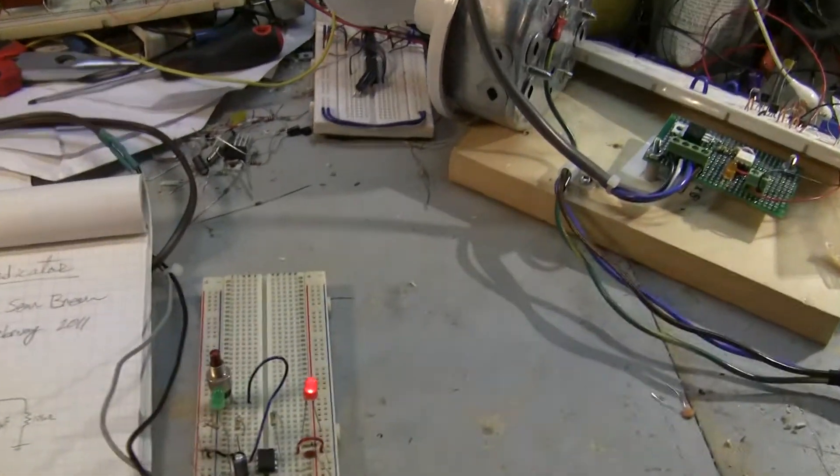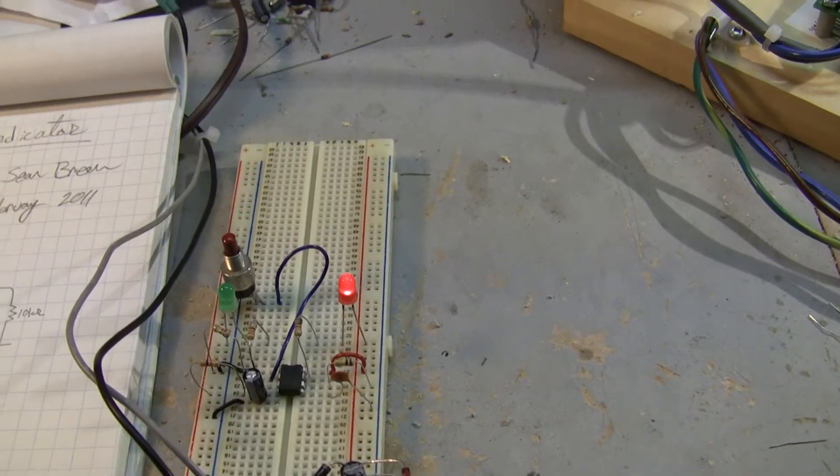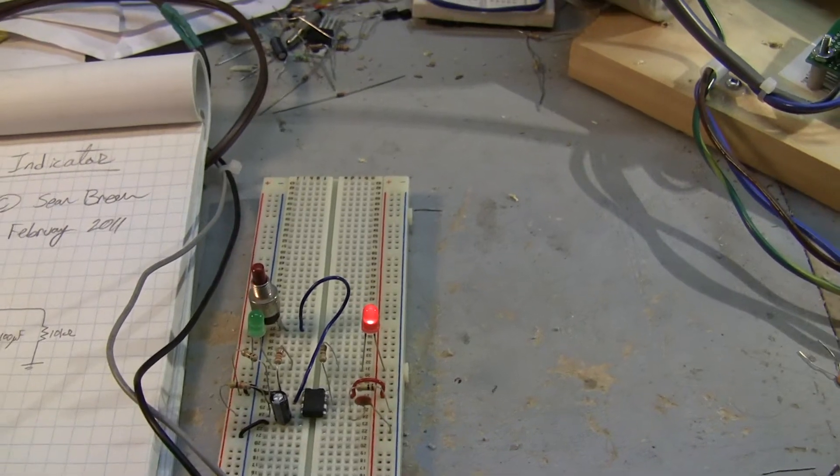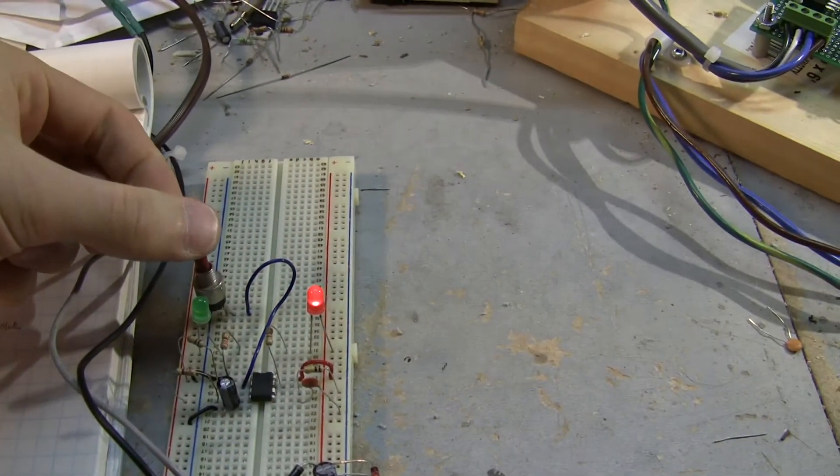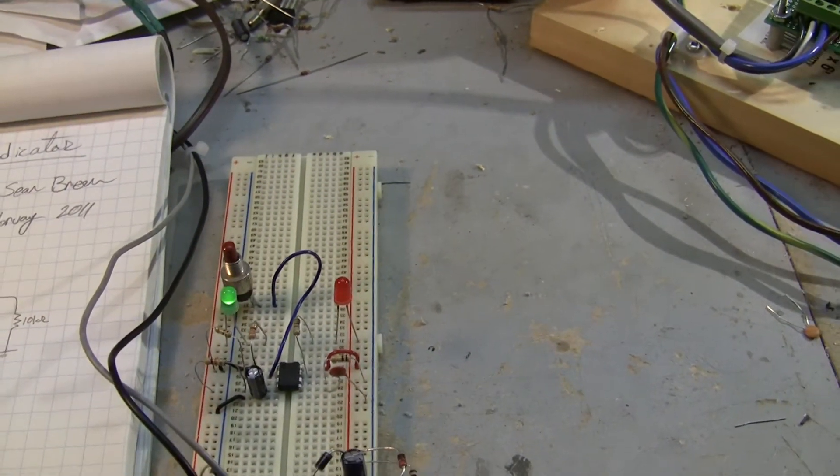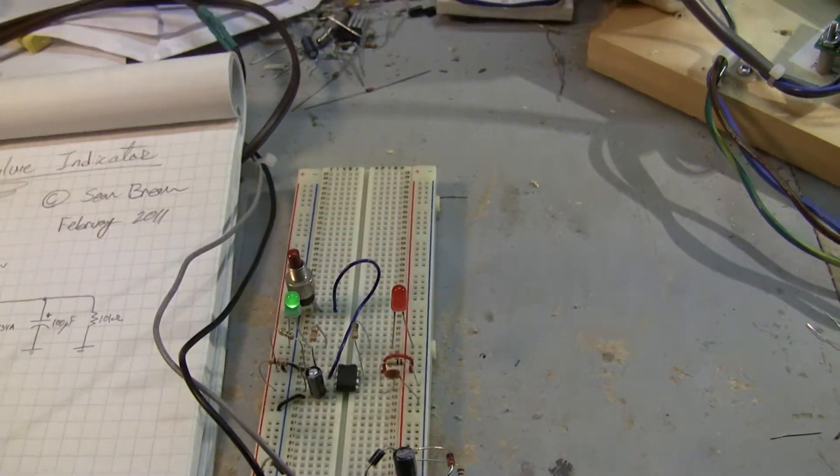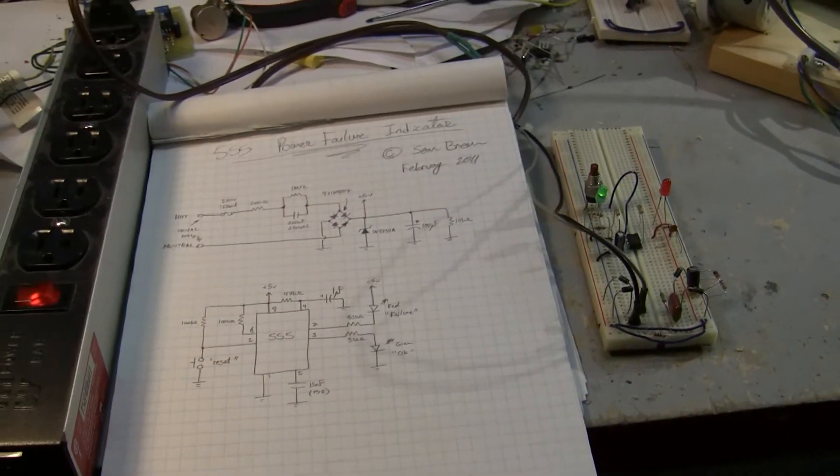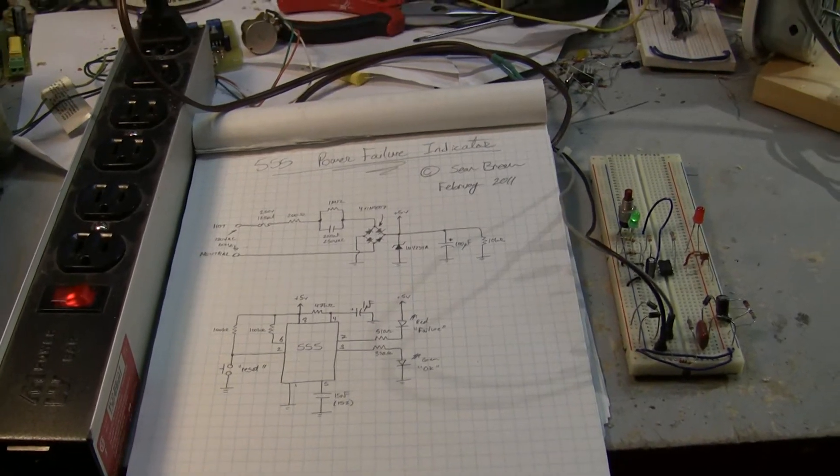Anyways, so I've got it connected here through this power strip with a switch. So I will turn it on and you can see now I've got here my red failure LED is activated, so it's telling me I've had a power failure. So I come up and I push the button here which is a reset, and I can see the red is extinguished and the green is now active.